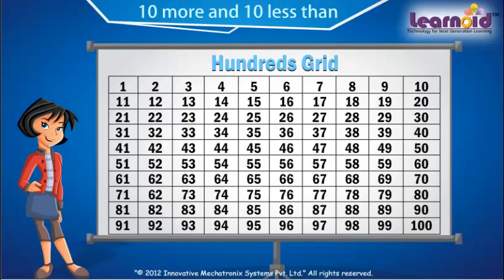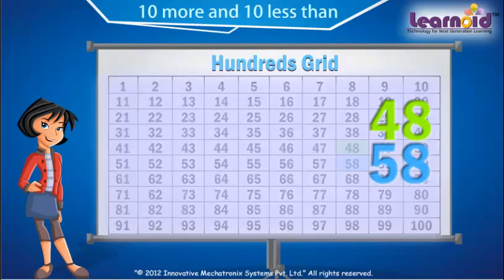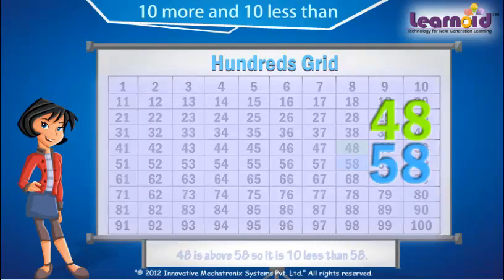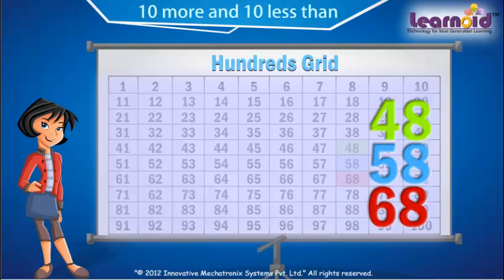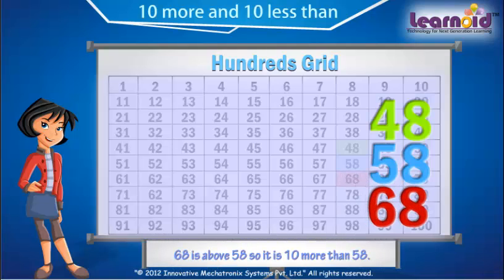Let's see another example. Find 10 more and 10 less than 58. 38 is above 58, so it is 10 less than 58. 68 is below 58, so it is 10 more than 58.